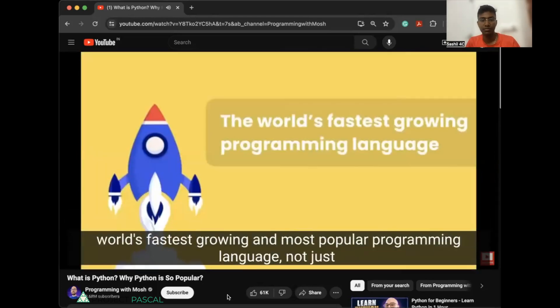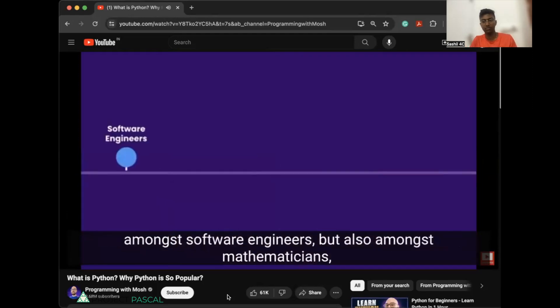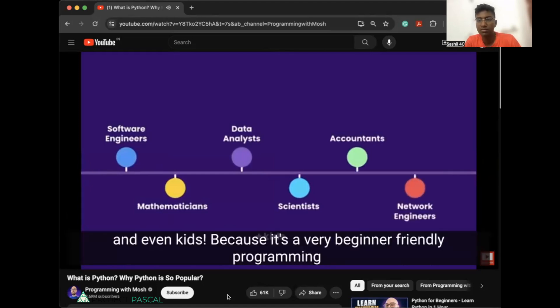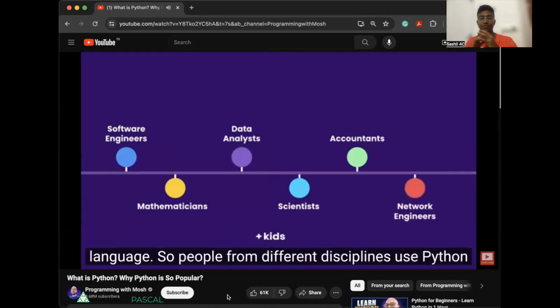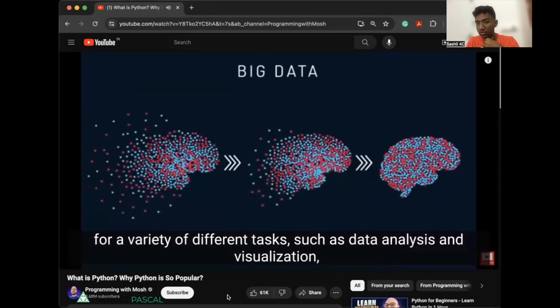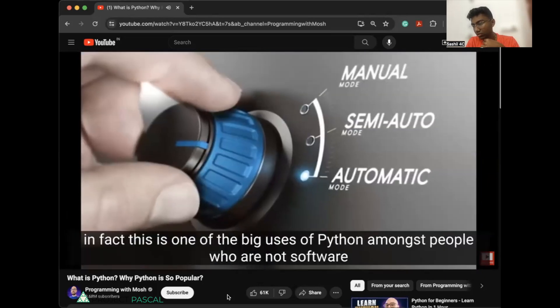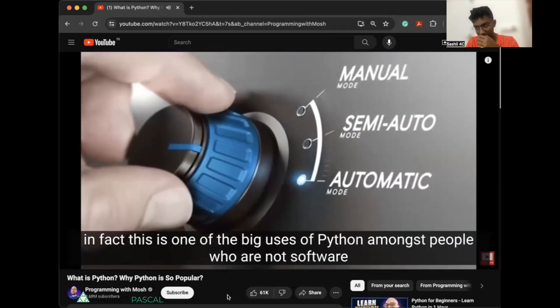Python is the world's fastest growing and most popular programming language, not just amongst software engineers, but also amongst mathematicians, data analysts, scientists, accountants, network engineers, and even kids, because it's a very beginner-friendly programming language. So people from different disciplines use Python for a variety of different tasks, such as data analysis and visualization, artificial intelligence and machine learning, automation. In fact,